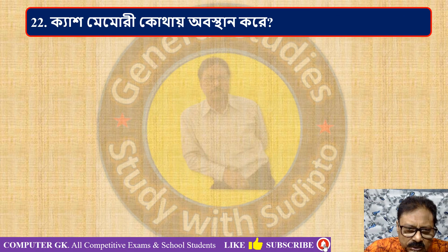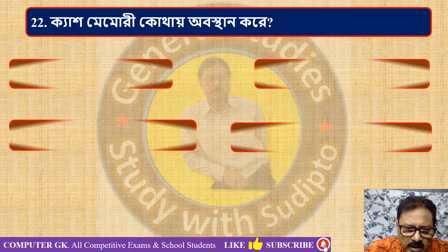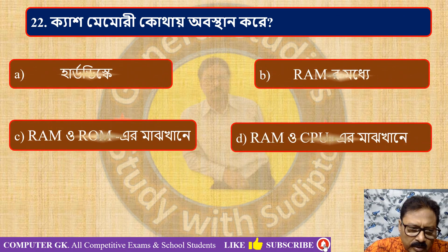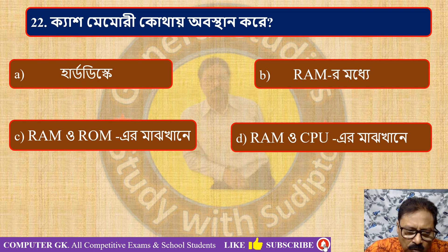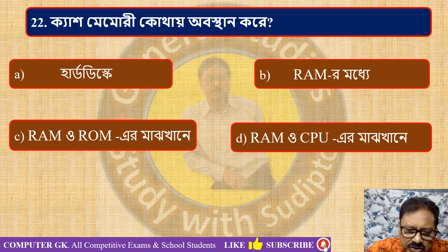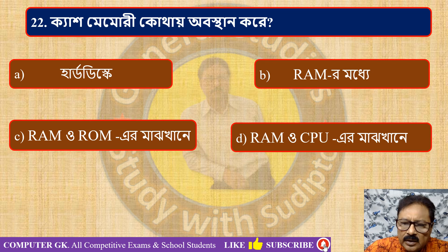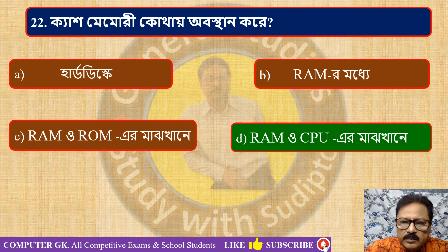Cache memory is an important topic. The question is: where is cache memory located? It is located between RAM and CPU — cache memory sits between RAM and the CPU.